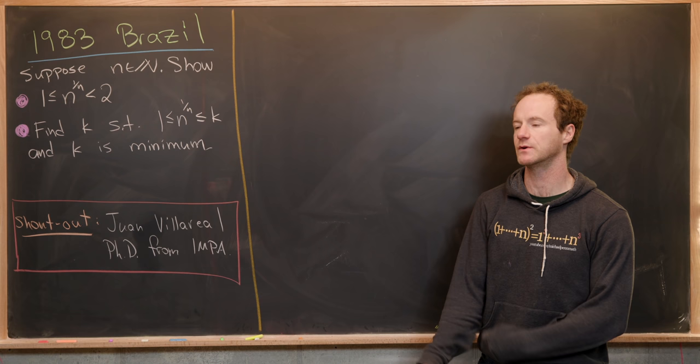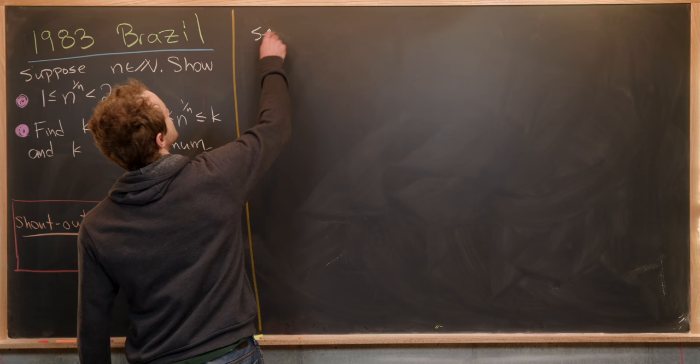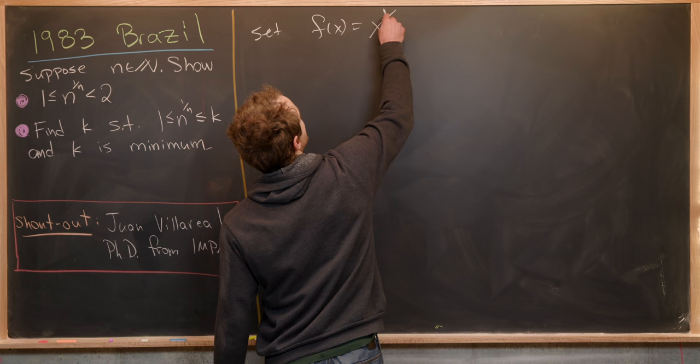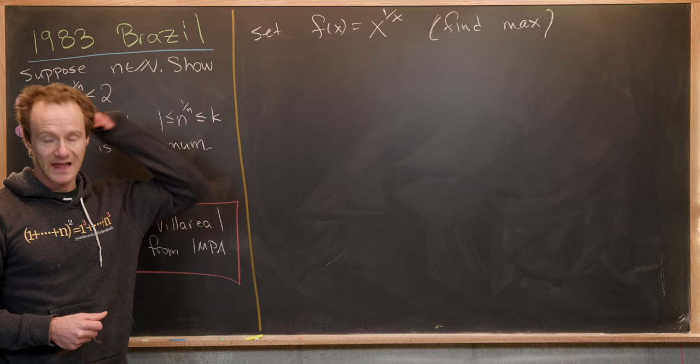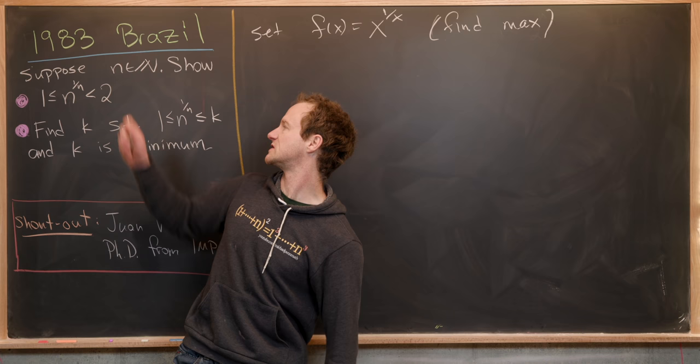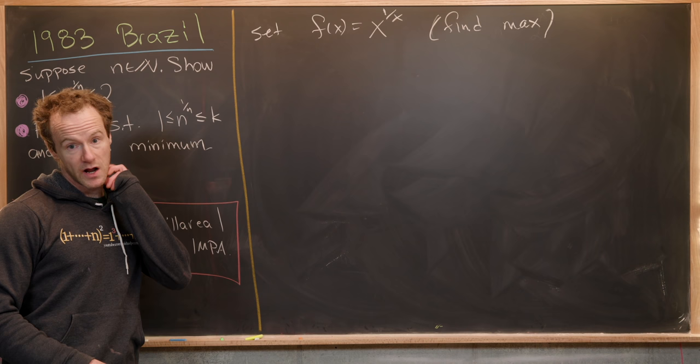What I want to do is set a function equal to something that looks like the expression inside. So let's set f(x) = x^(1/x). Essentially we want to find the maximum value of f(x) and when it occurs, and then somehow restrict that maximum to the natural numbers since we're really just evaluating this at n. Let's recall that maximums occur at critical points, which are where the derivative is zero or does not exist.